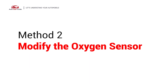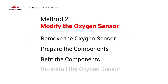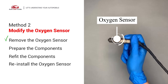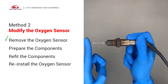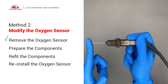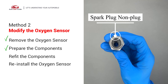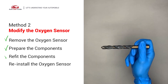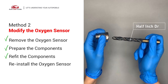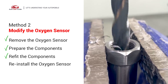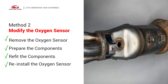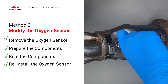Method 2: Modify the oxygen sensor. Remove the oxygen sensor from the converter by putting extra space between the sensor and the converter. A smart plug non-fouler now has enough space to fit into the oxygen sensor. Use a half-inch drill to refit it. Then put them together and put it back on the catalytic converter.